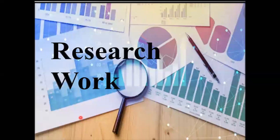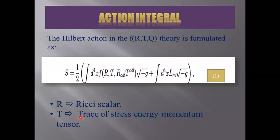Now, move towards my research work: action integral. The Hilbert action in the f(R,T,Q) theory is formulated as in equation number one, where R is the Ricci scalar, T is the trace of stress energy momentum tensor, R^αβ T_αβ is the contraction of Ricci tensor with that of the stress energy momentum tensor. It is the determinant of the metric tensor and L_M is the matter Lagrangian.